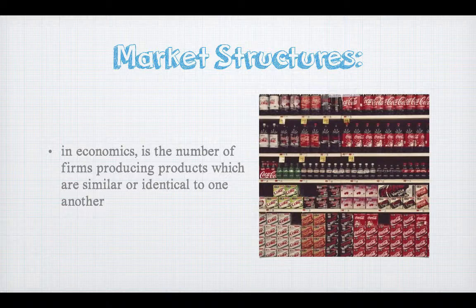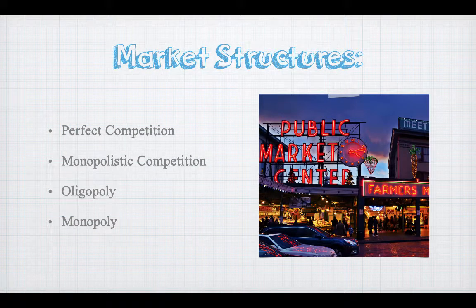At this point, take a look at your notes — you'll see a table there that works through the different market structures. We're going to look at four: the first is perfect competition, the second is monopolistic competition, the third is oligarchy, and the fourth is monopoly.